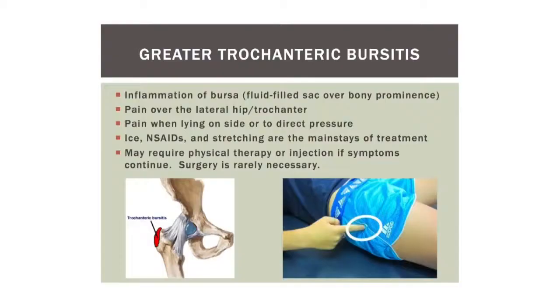Bursitis is a very common ailment we see in the office. A bursa is a fluid-filled sac over bony prominences. In the hip, right on the side over the trochanter, we have a bursa, and if that gets inflamed, we call it bursitis. The athlete has pain right on the side of the hip — it hurts when you push on it, and it hurts to sleep on it, which really helps in making the diagnosis. Treatment is typically conservative: anti-inflammatories, stretching, and ice. If it's bad enough, physical therapy for stretching is needed. Surgery is rarely required, but sometimes necessary.